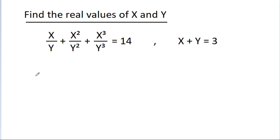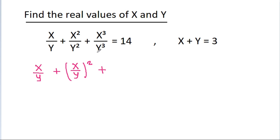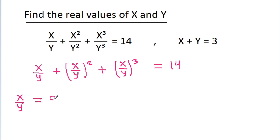So, we have x/y plus x²/y², which is (x/y)², plus x³/y³, which is (x/y)³, all equal to 14. If we take x/y equal to a,